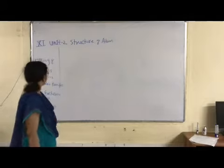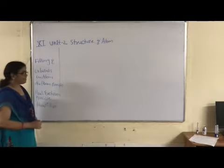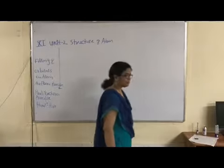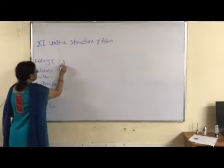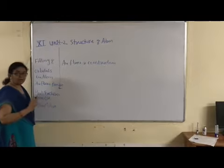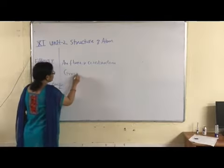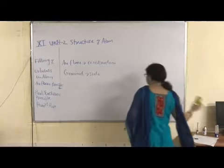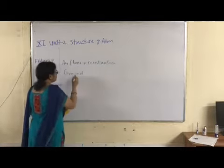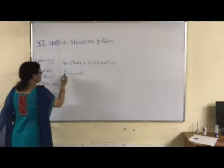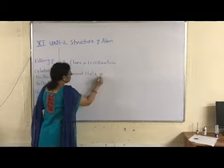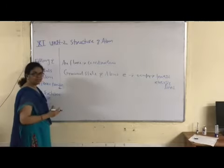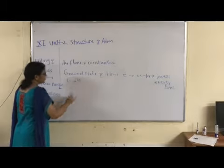Now students, we will discuss rules for filling of orbitals in an atom. The first rule is the Aufbau principle. 'Aufbau' means construction. According to this rule, in the ground state of an atom, electrons occupy the lowest energy orbitals first. In the ground state, the direction of filling of electrons is from low to high energy.